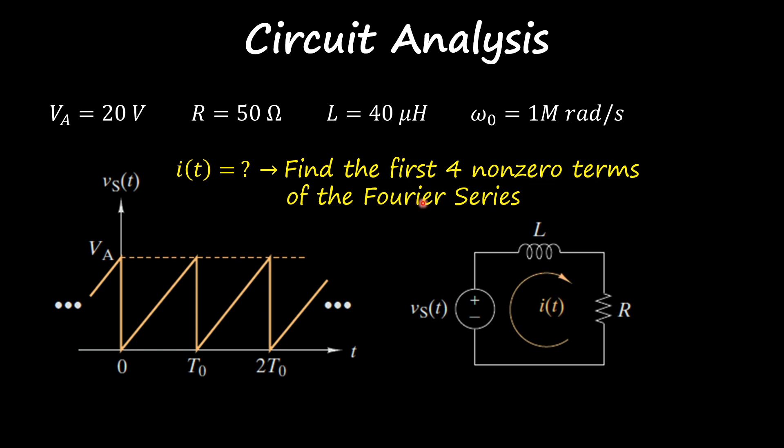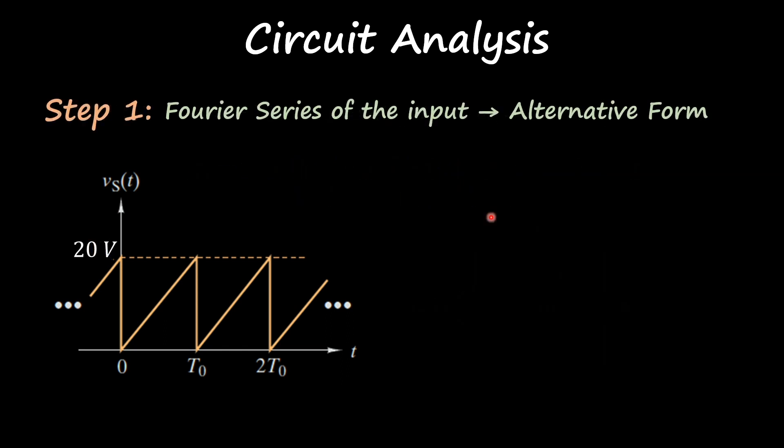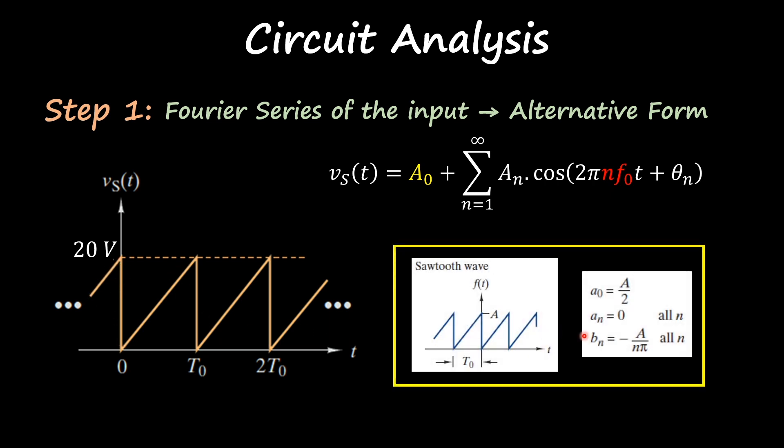Our step number one is to apply the Fourier series of the input in that alternative form. So this is the equation that we are focusing on, and we're going to use a table to find the Fourier coefficients of our sawtooth. We have the following Fourier coefficients.